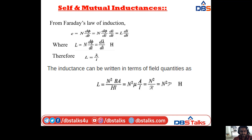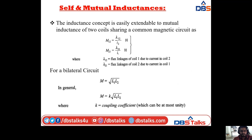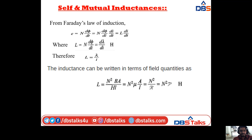Moving to self and mutual inductances. From Faraday's law, E = N dφ/dt. This can be written as N · (dφ/dI) · (dI/dt), which equals L · dI/dt. So from the law of induction, E = L dI/dt, where L = N dφ/dI. The unit of inductance L is Henry.